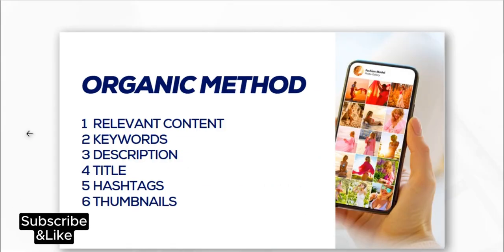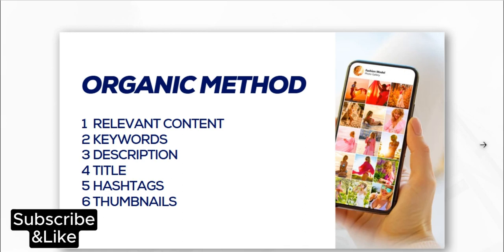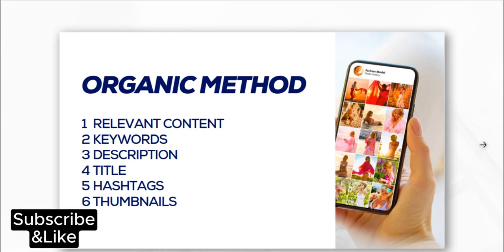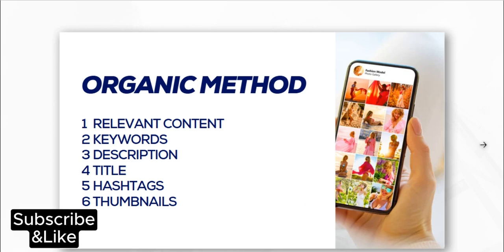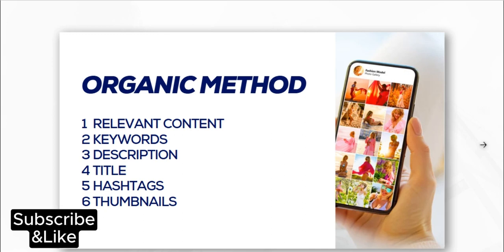The first method you can use to grow your social media audience is the organic method. This is simply posting relevant content, whether it is written content, video content, or a hybrid — a combination of picture and text, video and picture, or text and video. Depending on the platform you are using, you have to post relevant content. Organically means you are not paying anything; you are using your time to grow your audience.